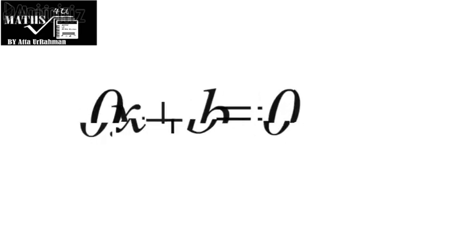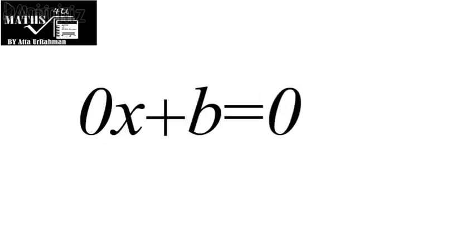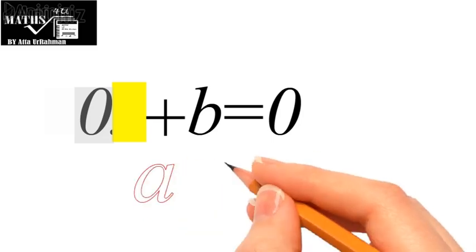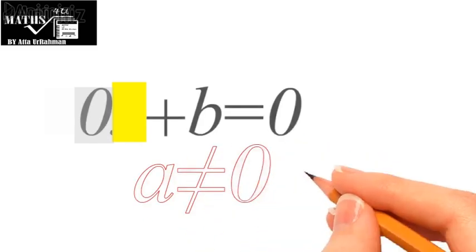The condition upon this equation that a is not equal to zero is because if a is equal to zero, then we will lose the unknown term x. That's why it is imposed that a must not equal to zero.